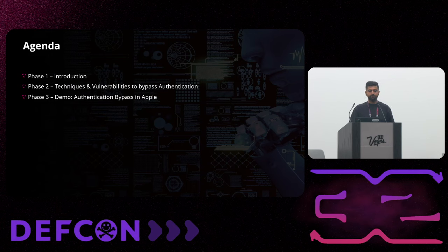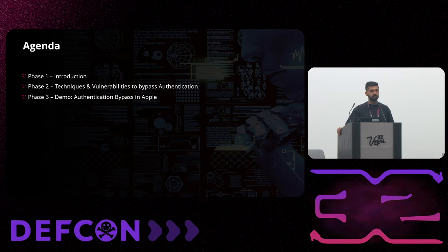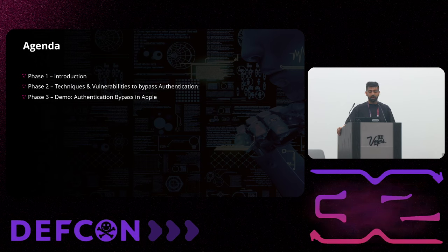The agenda for today's talk is divided into three different phases. First is introduction — I will discuss what authentication is, why it's crucial, and what are the different modules where you can look for such bugs. Phase two is techniques and vulnerabilities which I personally use to take over accounts and bypass authentications during my entire career — I have eight years of experience using these techniques during pentesting, red teaming, and bug bounty hunting. The third phase is an account takeover or authentication bypass I identified in Apple, which I will disclose.